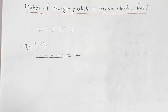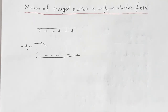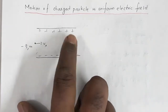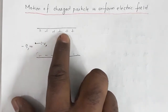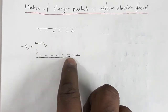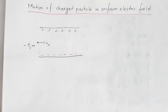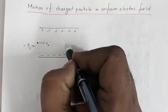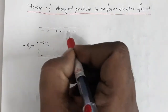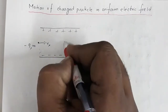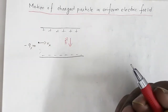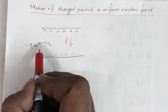Welcome to my channel. In this video I am going to explain the topic: motion of a charged particle in a uniform electric field. Consider two parallel plates — one positively charged and one negatively charged — with equal surface charge density, so there is a uniform electric field in the region between them. The electric field intensity is directed in the downward direction.